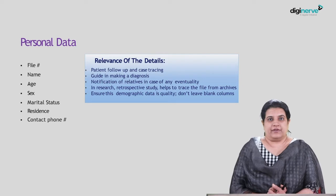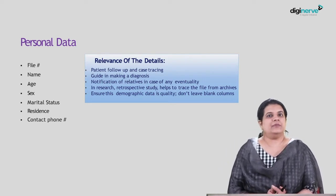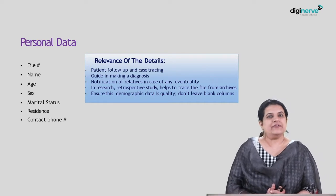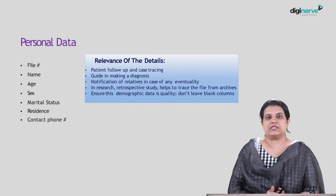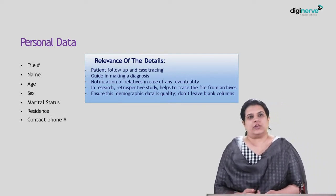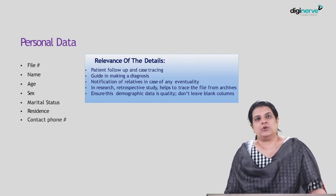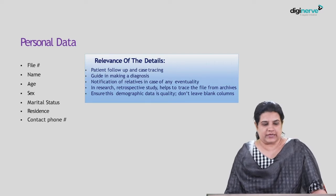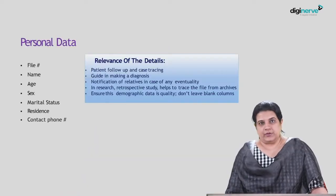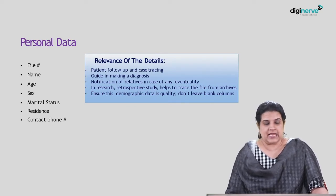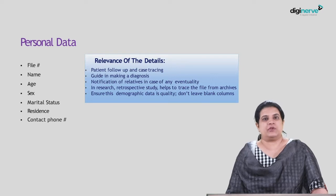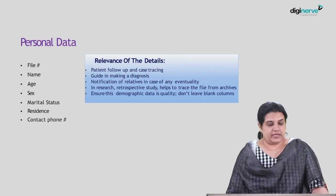The location where the patient lives sometimes gives a cue to the diagnosis. A farmer in a rural area exposed to dust and sunlight who has a pterygium — the positive factors are clear. Similarly, Listeria is a bacterium more likely seen in animal handlers, so occupation gives diagnostic cues. In any eventuality, relatives can be notified using address details, and in retrospective research you can call patients for extra information. Ensure demographic data is good quality with no blank columns.